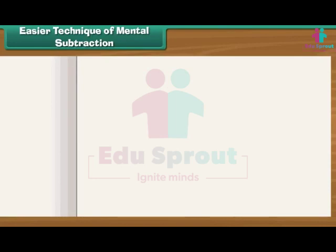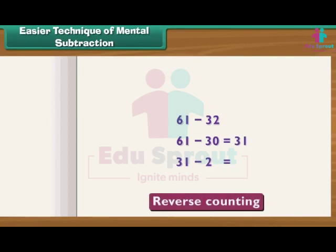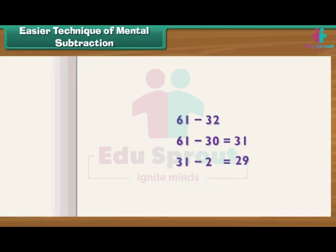Easier technique of mental subtraction: to subtract 32 from 61, first subtract 30 from 61 — the answer is 31. Now subtract 2 from 31 using reverse counting: 30, 29. So 29 is the correct answer.